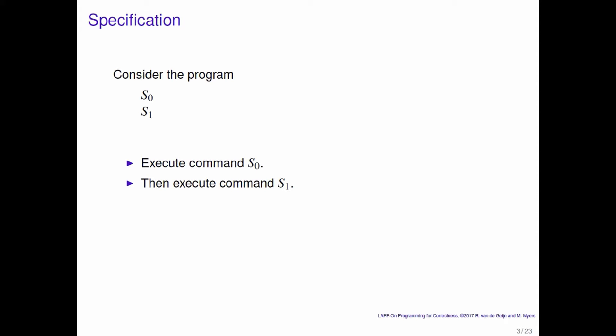How does it work? Well, you execute command 0 and then you execute command 1. Now sometimes we may not want to write these on separate lines. So a more concise way of writing this is S0, S1. And then to know where one command stops and the next one starts, we put a semicolon in the middle of it.